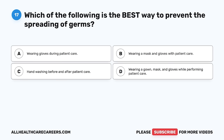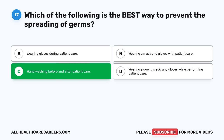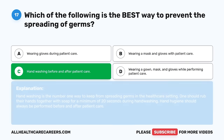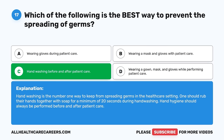Question 17. Which of the following is the best way to prevent the spreading of germs? A. Wearing gloves during patient care. B. Wearing a mask and gloves with patient care. C. Hand washing before and after patient care. D. Wearing a gown, mask, and gloves while performing patient care. The correct answer is C, hand washing before and after patient care. Hand washing is the number one way to keep from spreading germs in the healthcare setting. One should rub their hands with soap for a minimum of 20 seconds. Hand hygiene should always be performed before and after patient care.